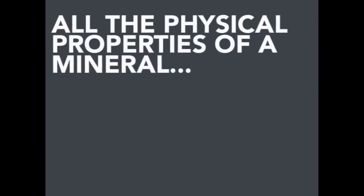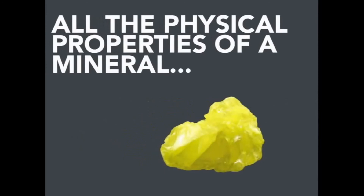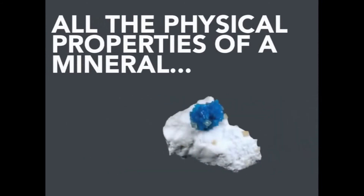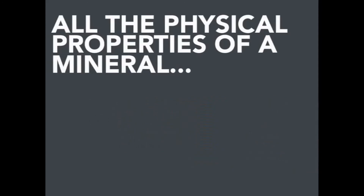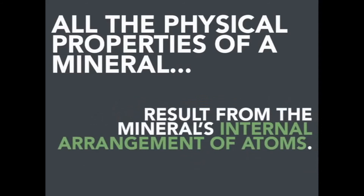All of the physical properties of a mineral — colors, shapes, textures, smells, tastes, hardness, and sheen — result from the internal arrangement of atoms. Sulfur appears yellow because of how its atoms are arranged. Quartz can appear clear because of its atomic arrangement. Halite tastes salty and sulfur has a rotten egg smell — all due to the internal arrangement of atoms.